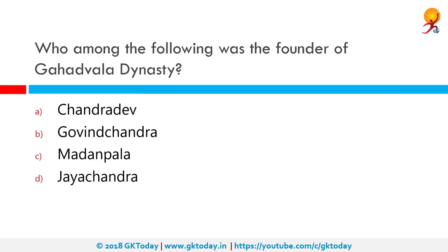Who among the following was the founder of the Gahadwala dynasty? The correct answer is Chandra Dev. The Gahadwala dynasty was a Hindu and Buddhist Indian dynasty that ruled the kingdom of Kanauch for approximately 100 years beginning in the late 11th century. The founder was Chandra Dev, who took control of Kanauch around 1090 AD. During the rule of his successor Govinda Chandra from 1114 to 1154 AD, the state reached the pinnacle of its power.